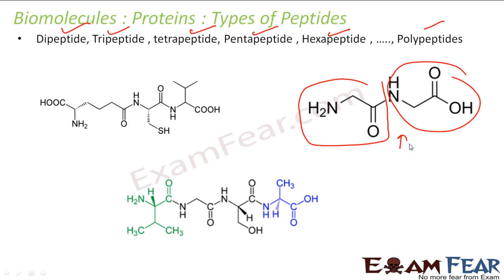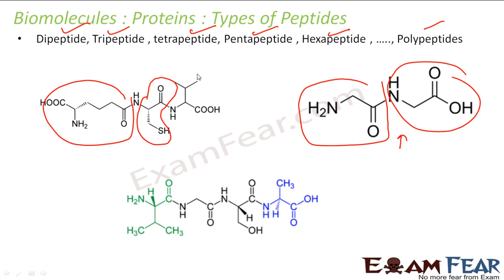In a tripeptide, three amino acids are joined by two peptide bonds. NH2 is generally at the end — this is one amino acid, this is another amino acid, and this is the third amino acid. They are all joined by peptide bonds. This is a tripeptide.